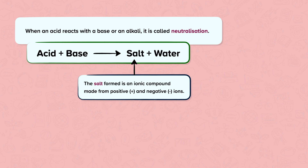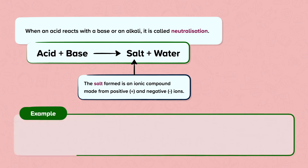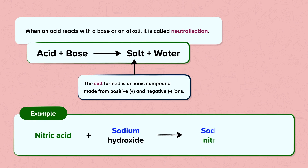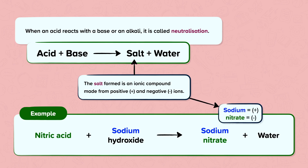The salt formed is an ionic compound made from positive and negative ions. The positive ion is usually a metal or ammonium ion, which comes from the base. For example, when nitric acid reacts with sodium hydroxide, sodium nitrate and water are produced. Sodium is the positive part of the salt and comes from the base sodium hydroxide. The nitrate is the negative part of the salt and comes from the nitric acid used.